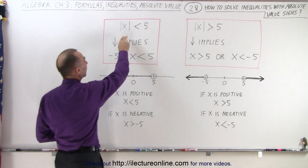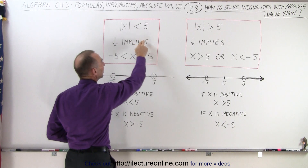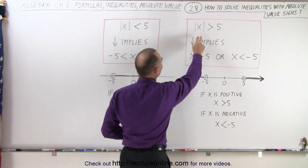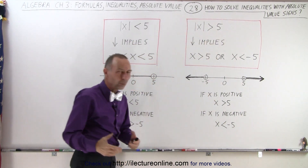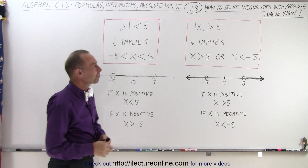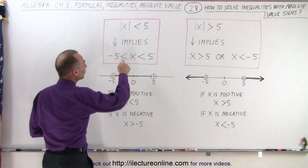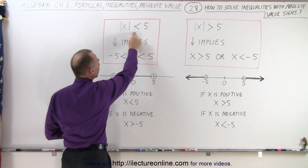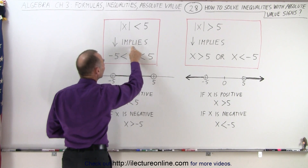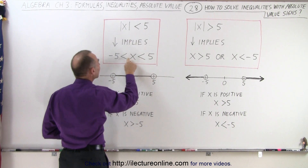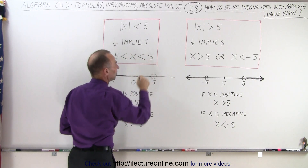Let's say we have the absolute value of x is less than 5, and here we have the absolute value of x is greater than 5. If it says the absolute value of x is smaller than 5, that implies that x is between negative 5 and positive 5.